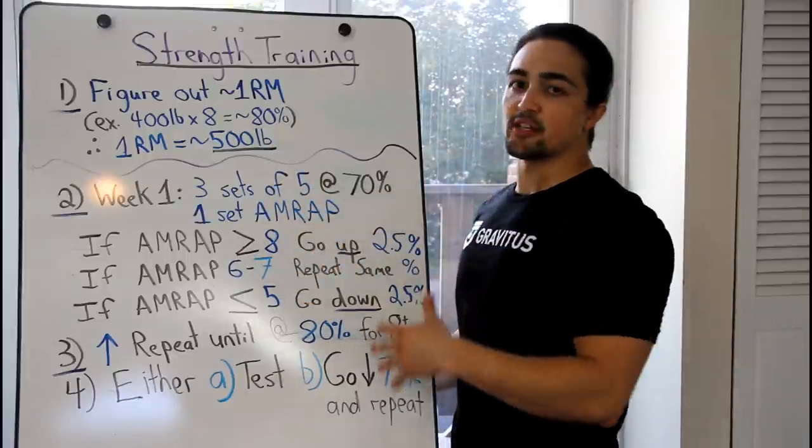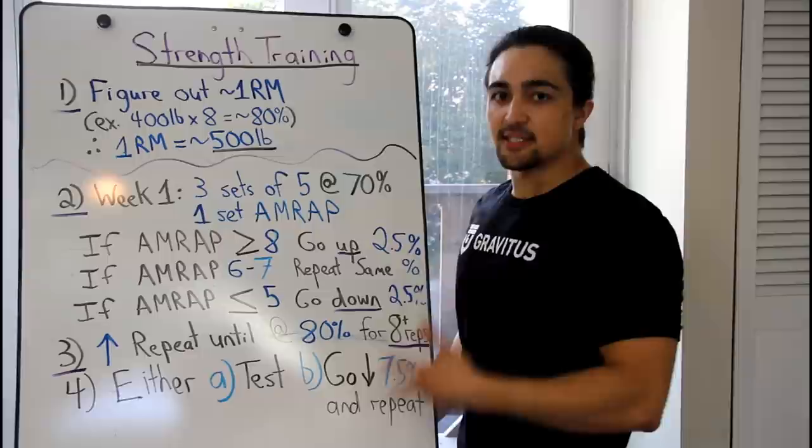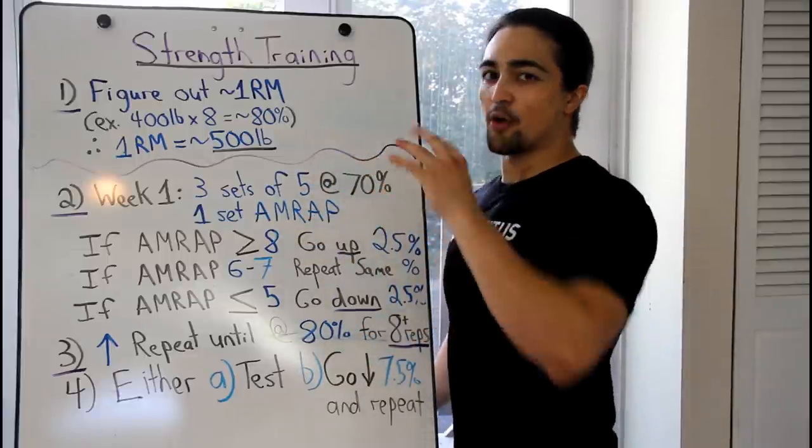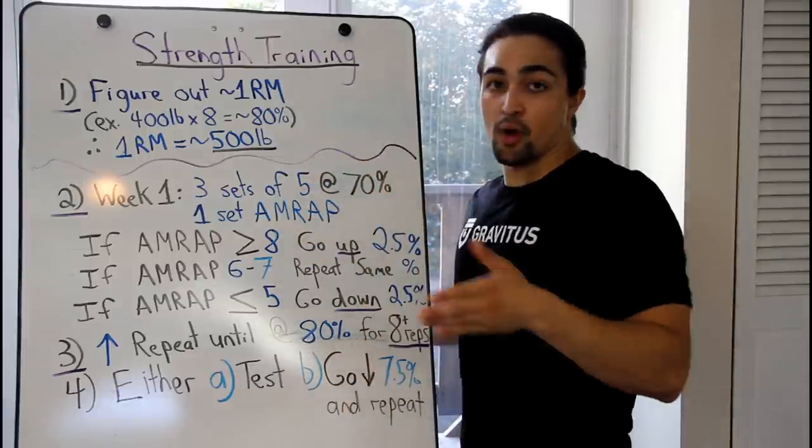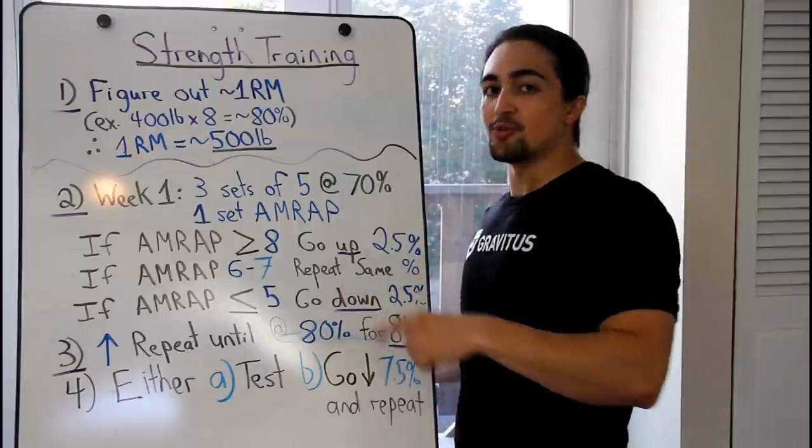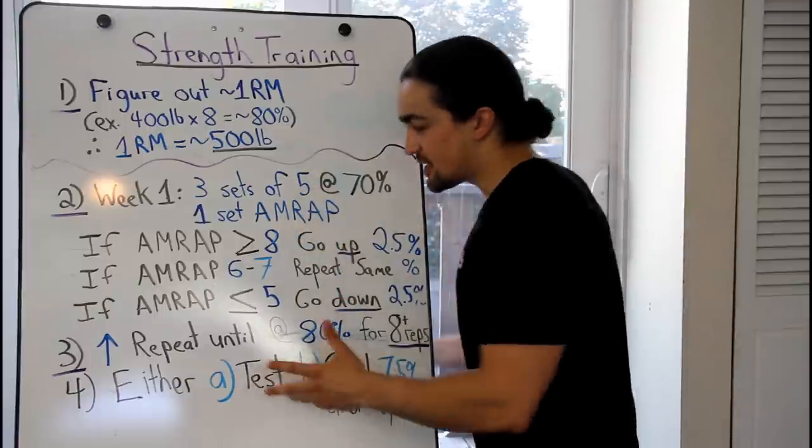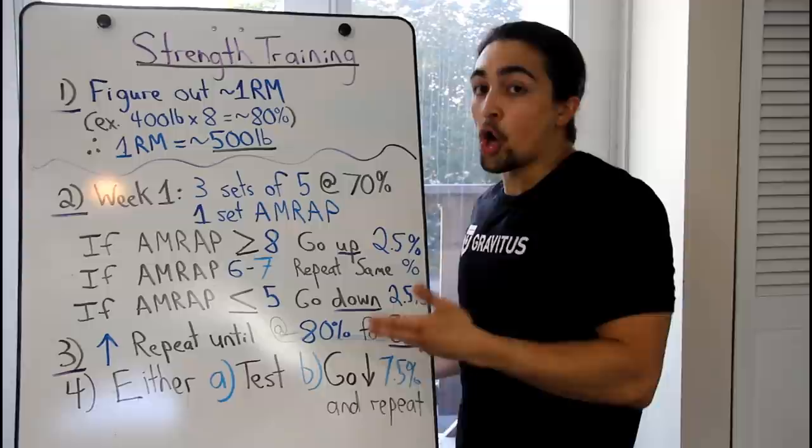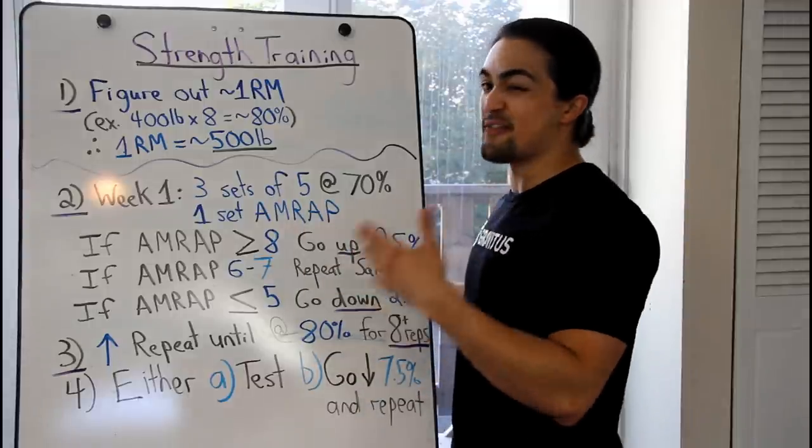This represents right here this methodology, something that's very basic, intuitive. It incorporates self-regulation, so based upon what you do, how you do, determines what you do the next week. It combines percentages along with a little bit of that auto-regulation, how you perform, how you feel on that day.